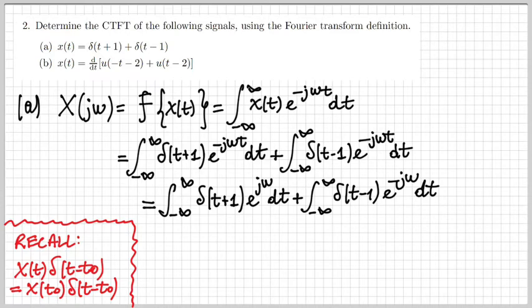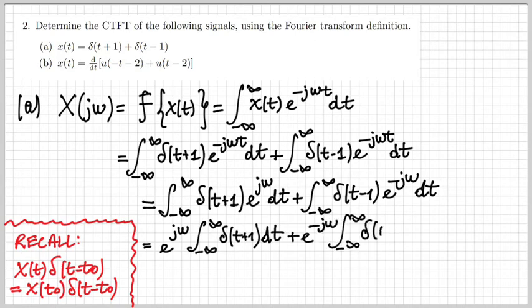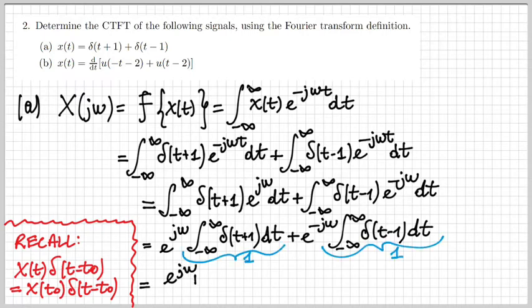Replacing those values, I obtain new integrals. I notice that e to the jω and e to the minus jω are not functions of t, so they can be taken out of the integrals. The remaining integrals are simply integrals of deltas, and the integral of a delta is one. So I obtain the sum of two exponentials, and dividing by two and multiplying by two, this can be written as 2 cosine of ω.